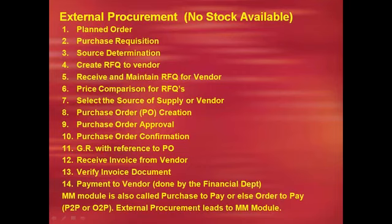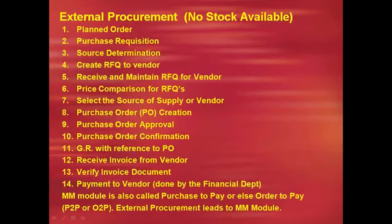The second case is stock available — the customer has placed an order and the company has stocks of the raw materials. Here, the planned order is converted directly to a production order. The company releases the production order, issues subcomponents with reference to the production order, confirms the production order, and executes the finished material. GR is created with reference to the production order, the production order is technically completed, and production order settlement takes place — comparing target and actual cost of production.